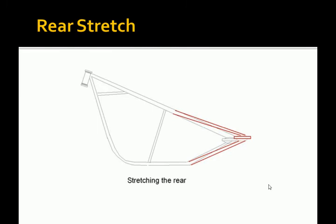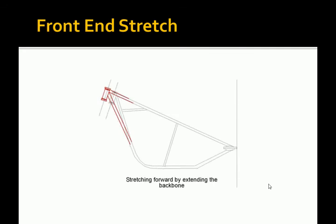Next is a stretch in the front end. In this case, a combination of two of the stretches I mentioned earlier. In this case, the effect has been to lengthen the bike without altering the rake. If just the bottom tube had been extended, the rake would have grown. And we're going to discuss more on rake in a moment.